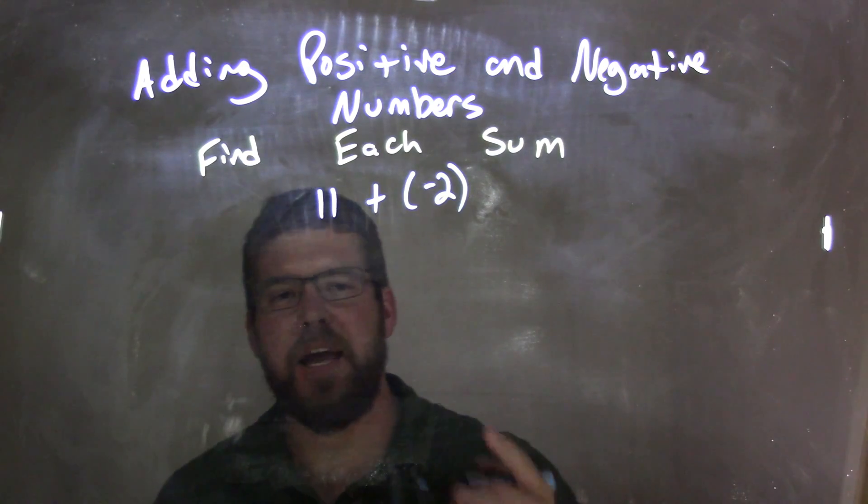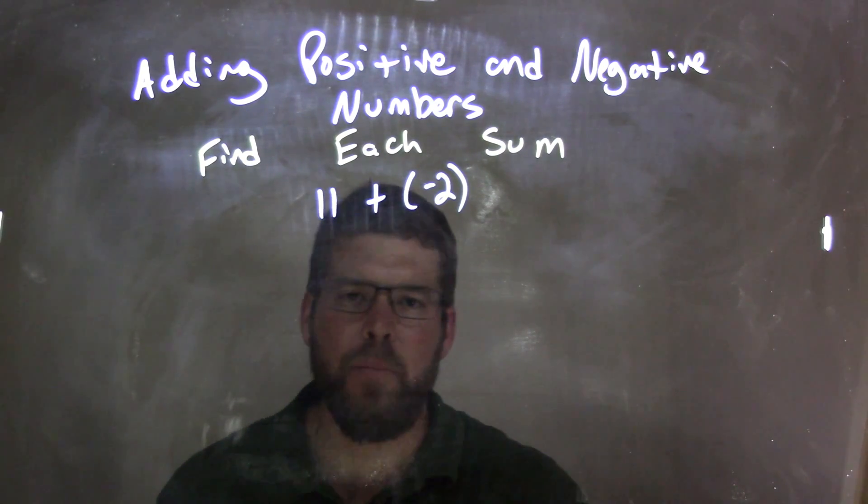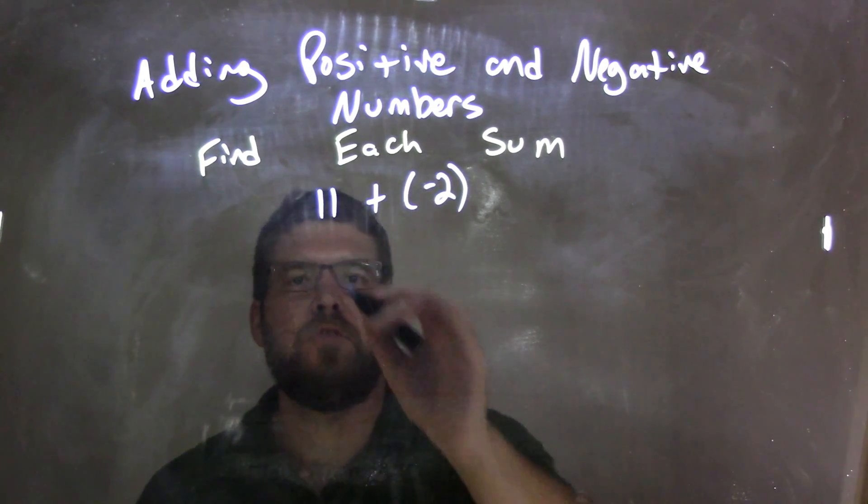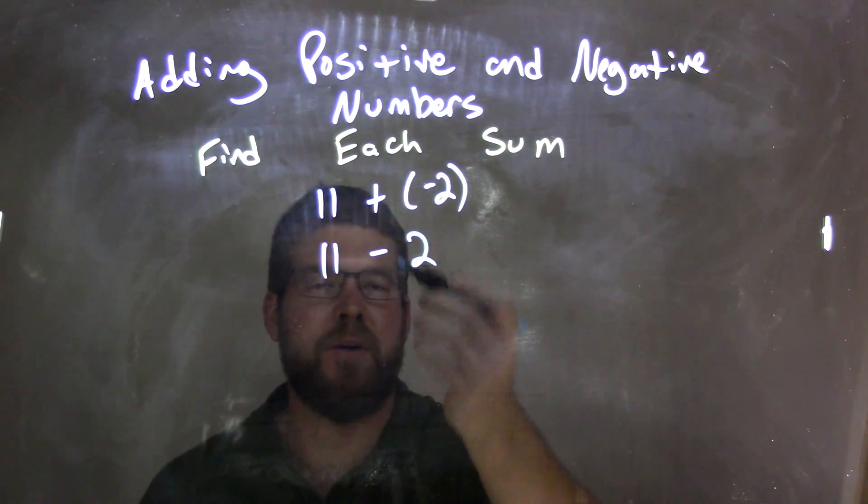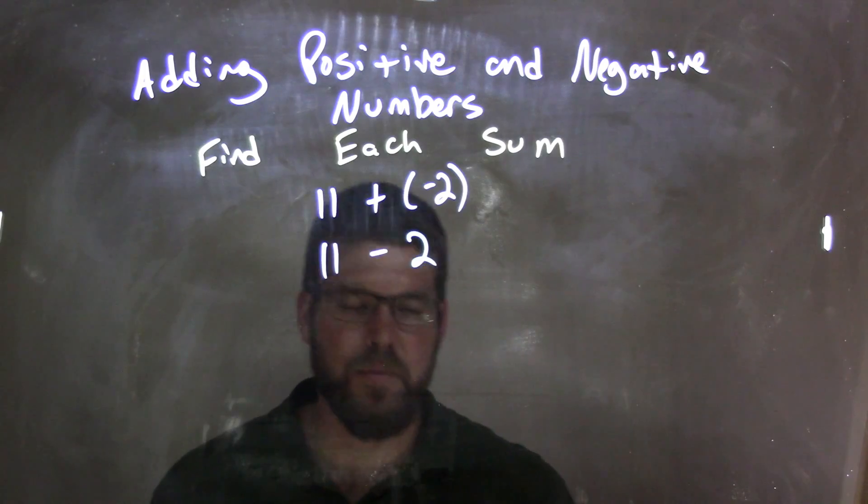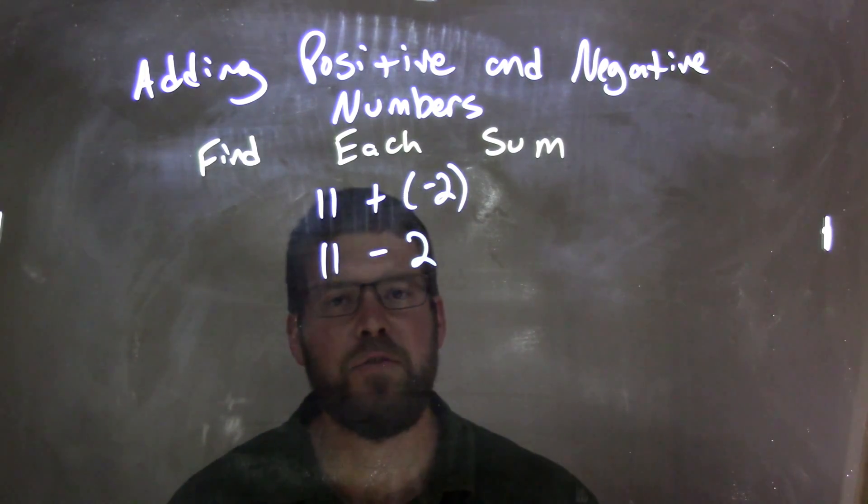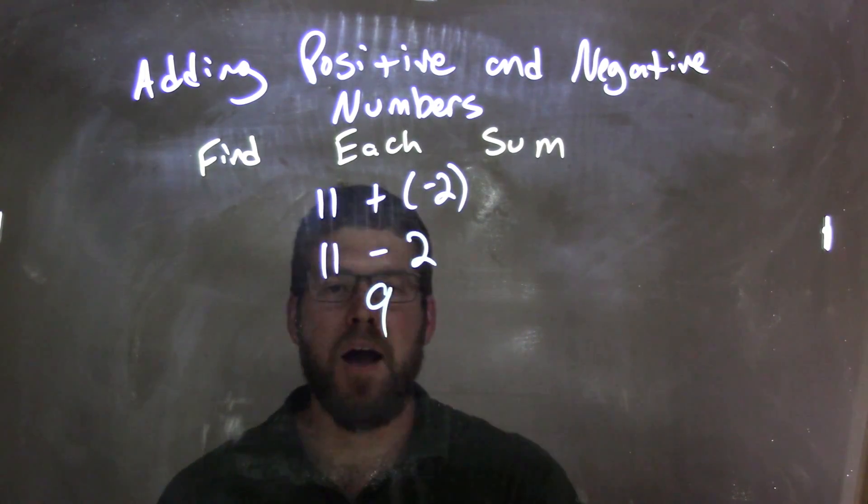We know adding a negative number is the same thing as subtraction. So we have 11 and we need to subtract 2 - adding a negative is the same as subtracting a positive. So 11 minus 2 comes out to be 9.